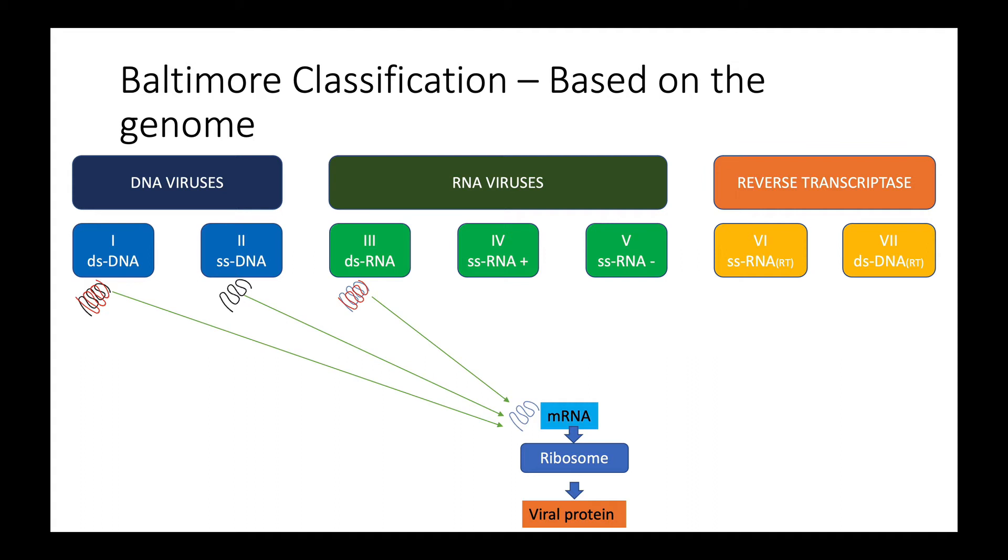Class four viruses are single-stranded RNA viruses with a positive sense. What do we mean by positive sense? This means that the viral RNA can be directly read by the host ribosomes to initiate synthesis of viral proteins. There is no need to go through the additional step of going through a messenger RNA.